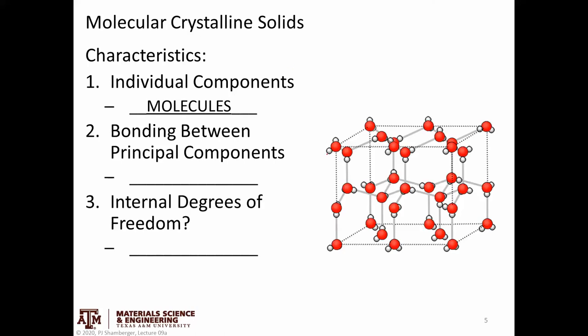Let's move on to think about a molecular crystalline solid. In this case, the individual components aren't atoms but molecules. This is an example of ice — one crystal structure that water molecules can take. There are dozens of different crystal structures observed or proposed for ice depending on temperature and pressure. The important thing is that the individual components are molecules, and the bonding between these principal components tends to be secondary bonding.